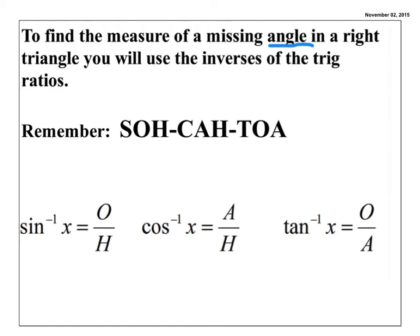The difference today is going to be our notation. You will notice that on the sine, cosine, and tangent today there is a little negative 1, which stands for an inverse function. When we are solving for a missing angle, because the angle is associated with the sine, cosine, or tangent, we have to use inverse functions in order to solve the problem.